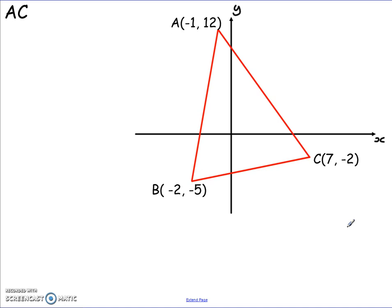Let's start with side AC. I want the median which goes to the middle point of that side, from point B — so it's point B right to that midpoint. Remember, for the equation of the line I need two points so I can calculate the gradient. Since this is the median, I have to calculate the midpoint of the line, and then use that and point B to calculate all the other relevant information. So the first thing I need to do is find the midpoint.